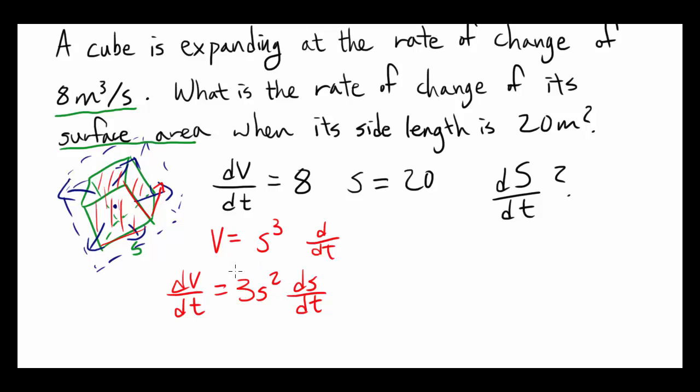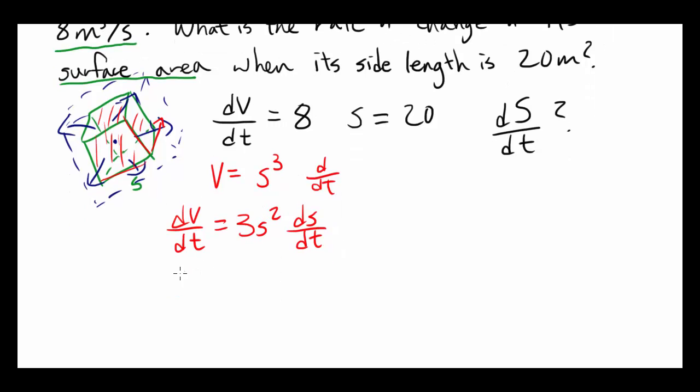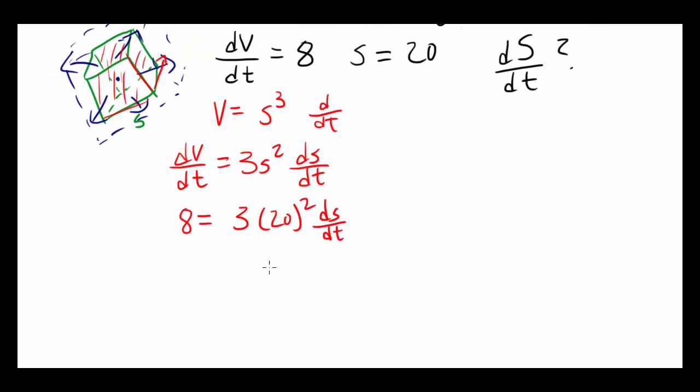Now, is there anything we can obtain from this equation? Well, we know dV/dt is 8. We know S is 20. So we have 3 times 20 squared. So using this, we can find dS/dt at this time.